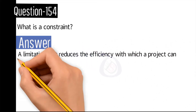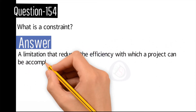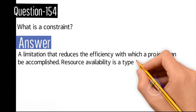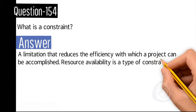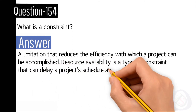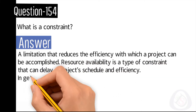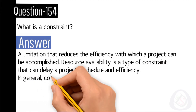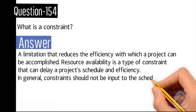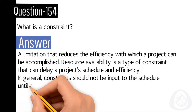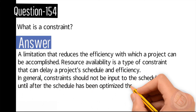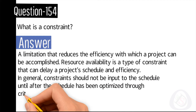Question number 154: What is a constraint? Answer: A constraint is a limitation that reduces the efficiency with which a project can be accomplished. Resource availability is a type of constraint that can delay a project's schedule and efficiency.